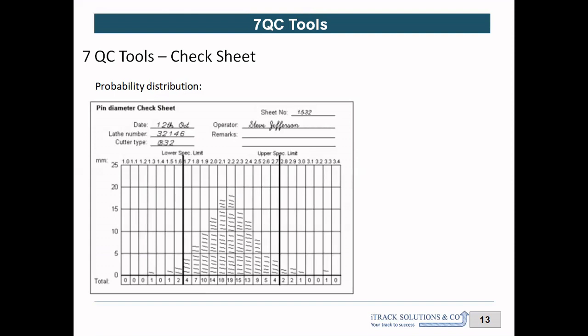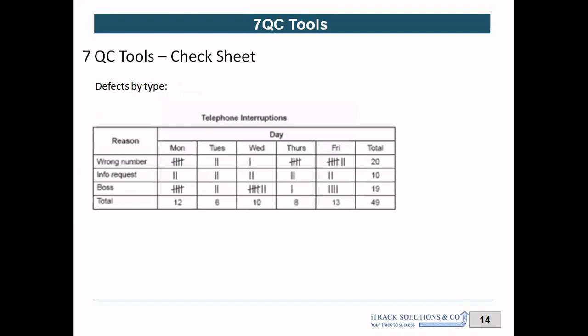This tool is very useful for converting your raw data into a histogram. We are planning another video on histogram in our seven QC tools series. This probability distribution check sheet is the first step towards converting your raw data into a histogram.